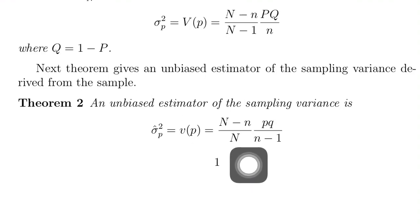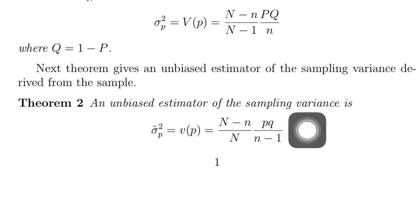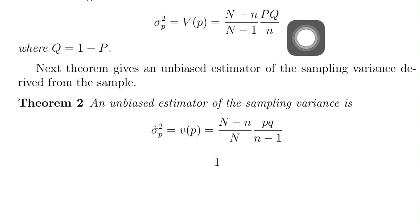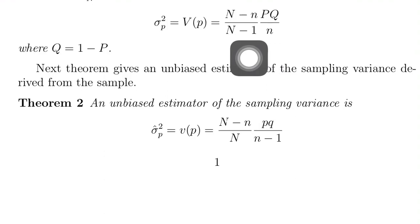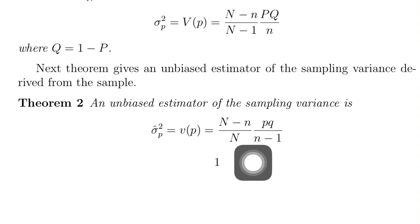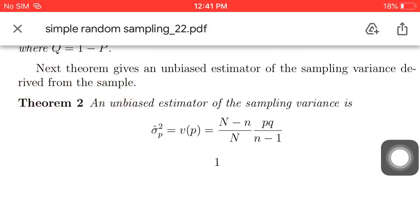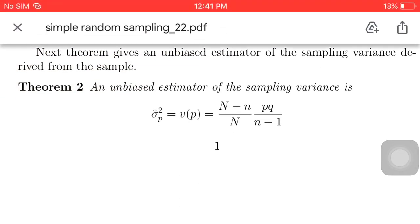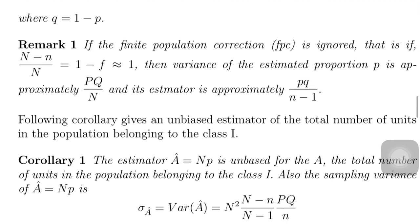The estimated variance — that is, small v of p — would be: n minus n by N, times p times q, divided by n minus 1, where q equals 1 minus p. Here p and q are the sample-based estimates replacing the unknown population values P and Q in the variance formula.